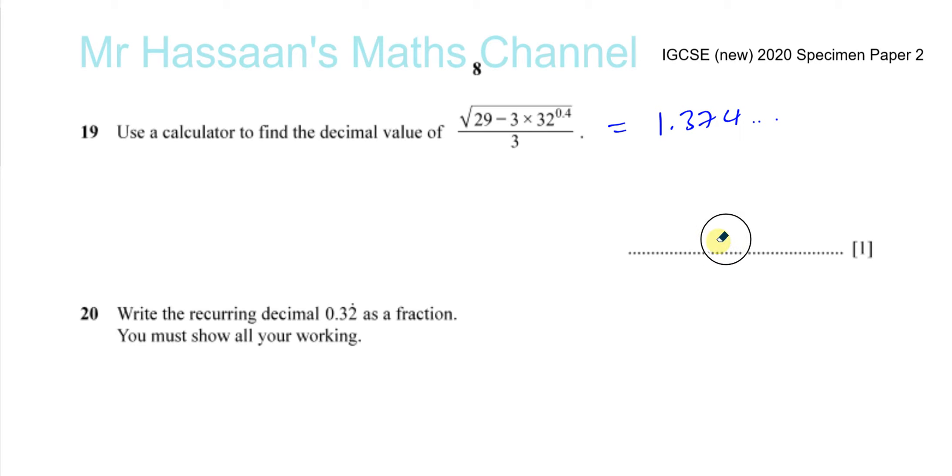You have to write it to 3SF because it's not stated otherwise in the question—it doesn't say write your full calculator display, so you round to 3SF: 1.37. That's your answer for question number 19. This is how to use a calculator, very simple question.